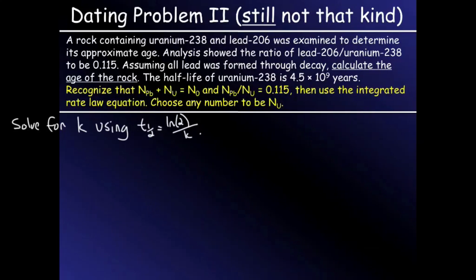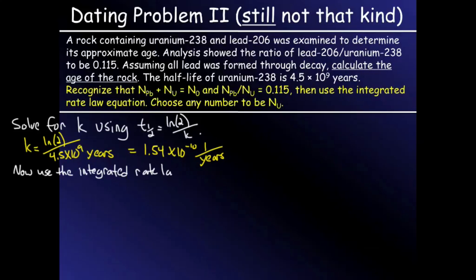So the first thing I'll do is solve for the decay constant using the half-life equation, and I get 1.54 times 10 to the negative 10, one over years. Then I can use the integrated rate law in order to solve for time.